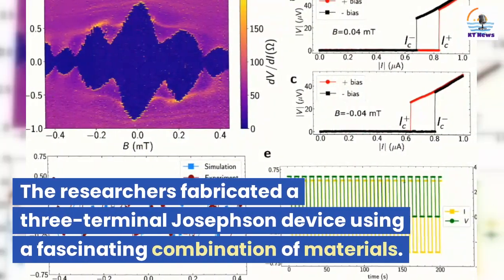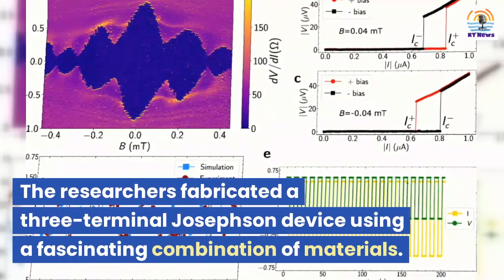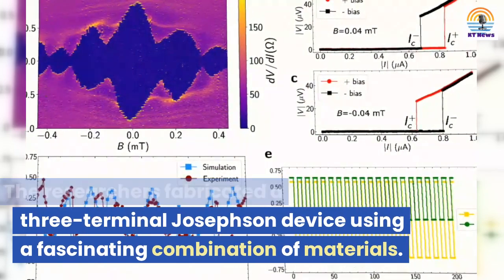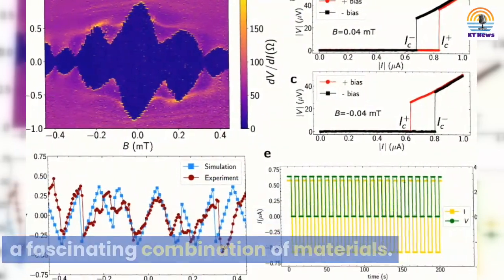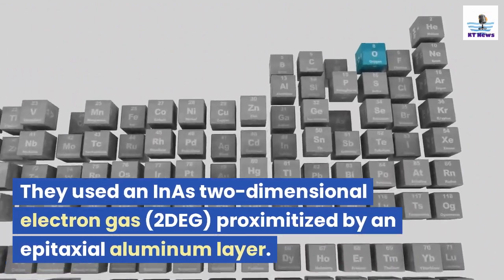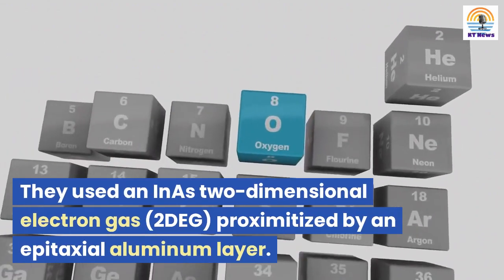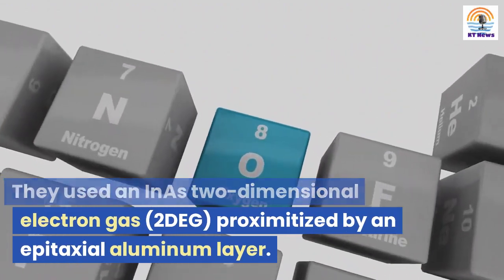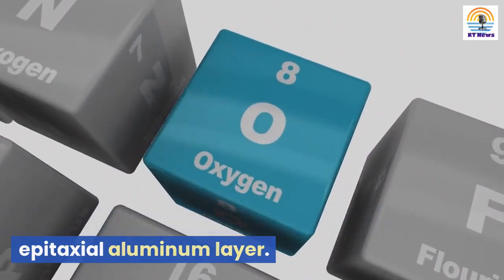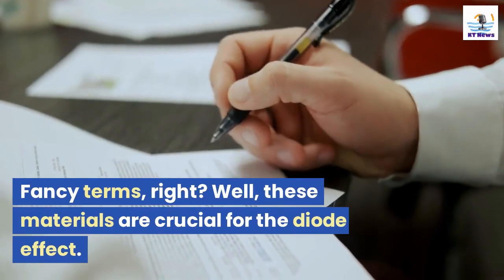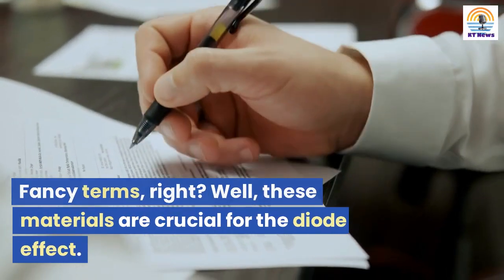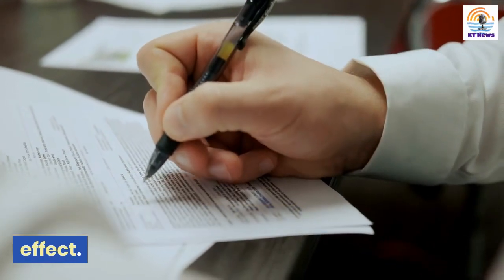The researchers fabricated a three-terminal Josephson device using a fascinating combination of materials. They used an InAs two-dimensional electron gas, 2DEG, proximitized by an epitaxial aluminum layer. Fancy terms, right? Well, these materials are crucial for the diode effect.